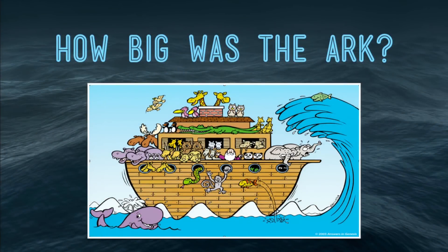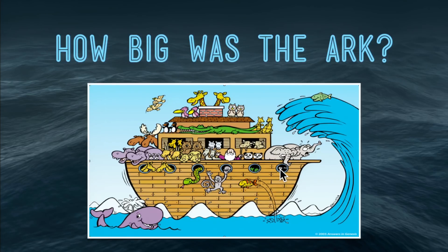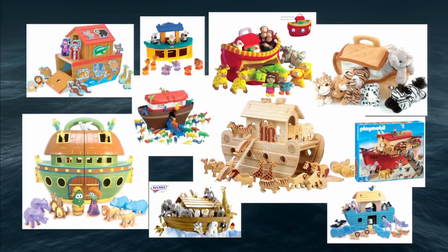Many of us have become accustomed to looking at images of the ark like this. We call these bathtub arcs because they're kind of shaped like a bathtub, or fairy tale arcs because they're not representative at all of the real thing. The only thing realistic about this picture is the elephant, because that elephant knows what's going to happen — when that wave hits, the ark's going to capsize and everybody's going to fall out. And yet this is what we see all the time, what we have children play with. What does this say to our children about the ark and the flood?